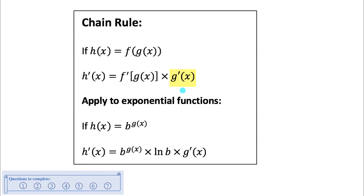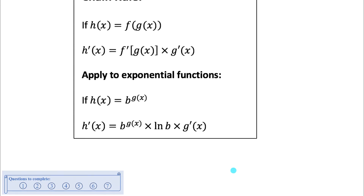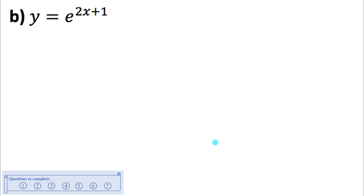How do we use chain rule with exponential functions? When we think of the inside function, we think of the function in the exponent. Since an exponential function has a base greater than zero and our variable x is in the exponent, if that exponent is some function of x, we need to use chain rule. When differentiating an exponential function we do the power multiplied by ln of the base, and then multiply that by the derivative of the exponent g'(x). Let's see what that looks like through a few examples.